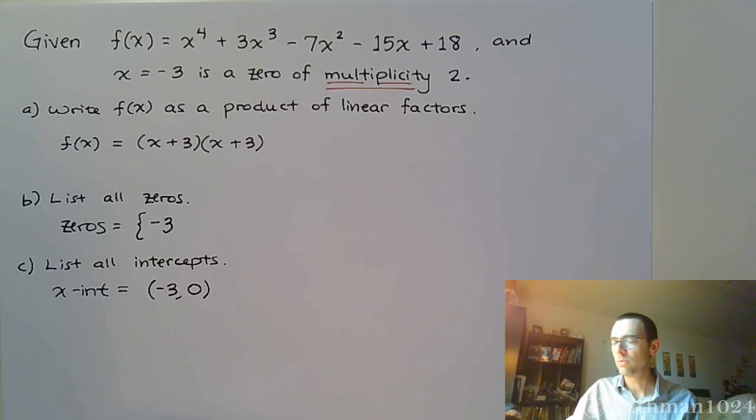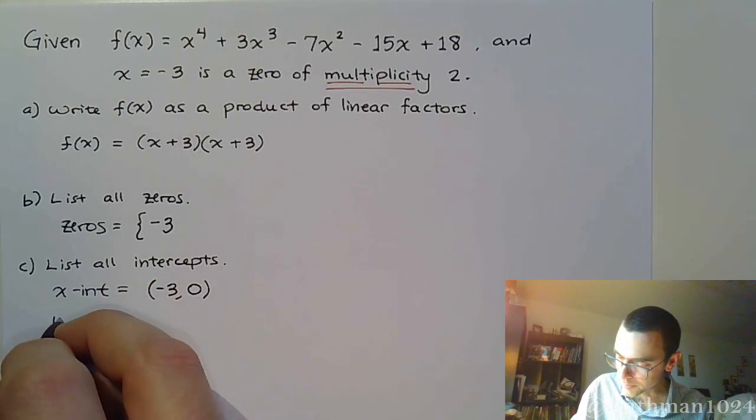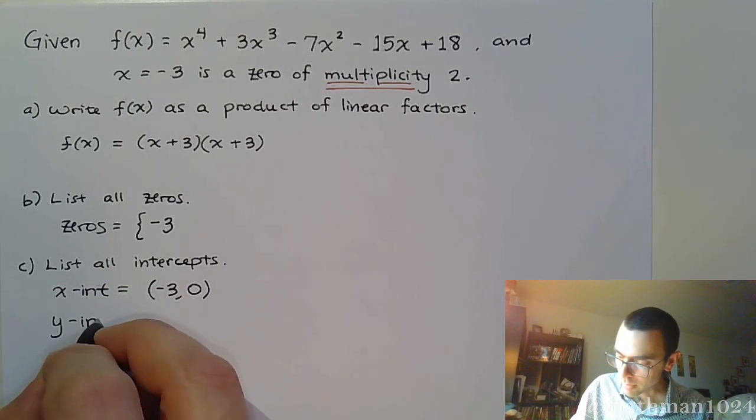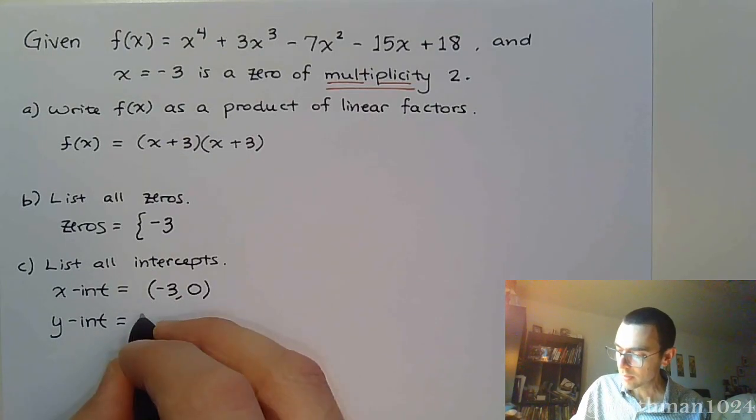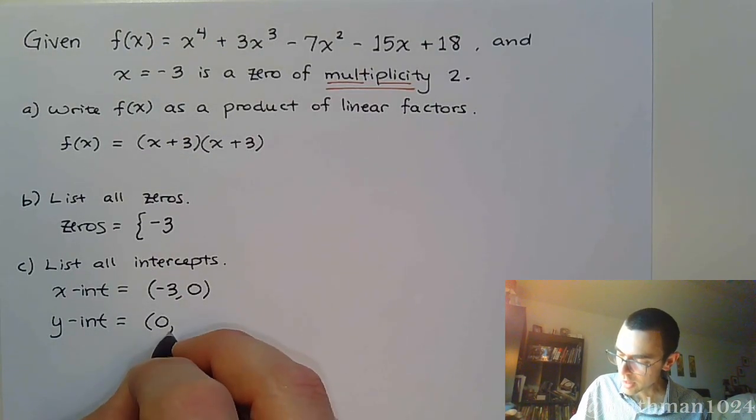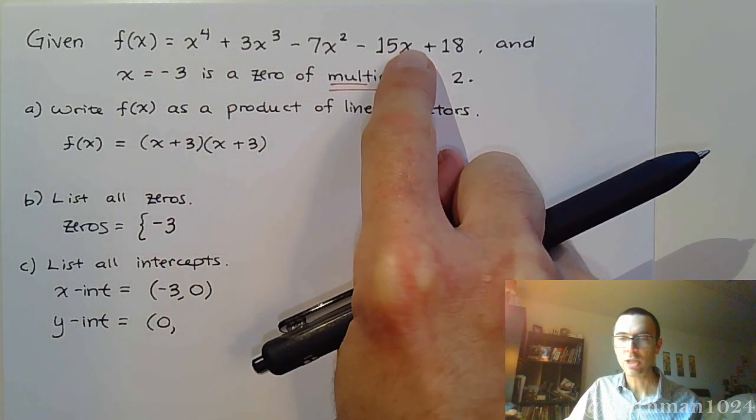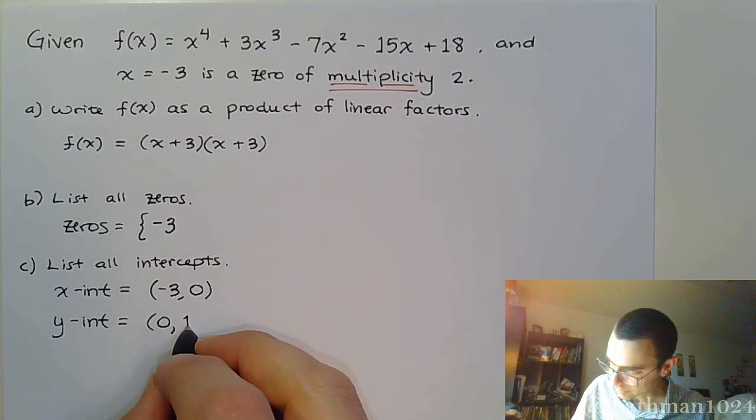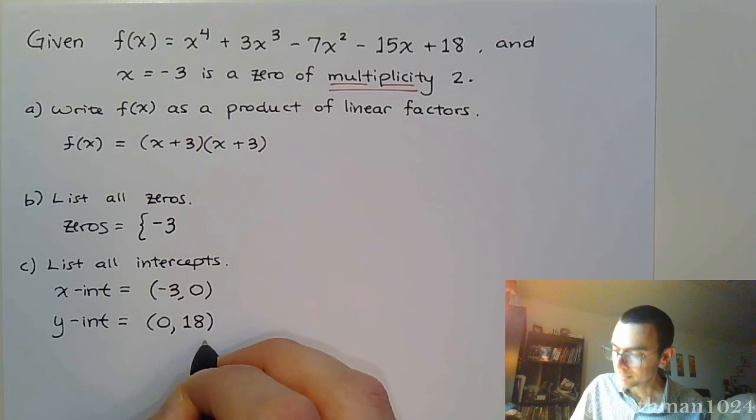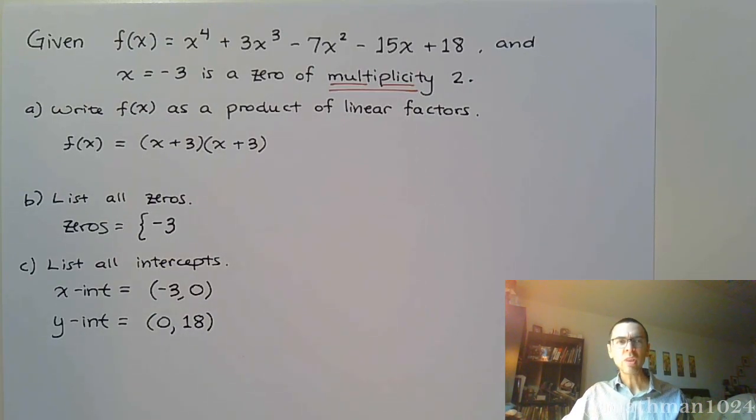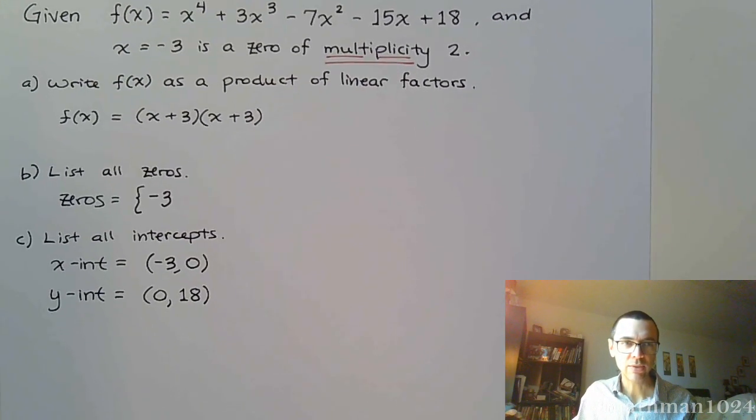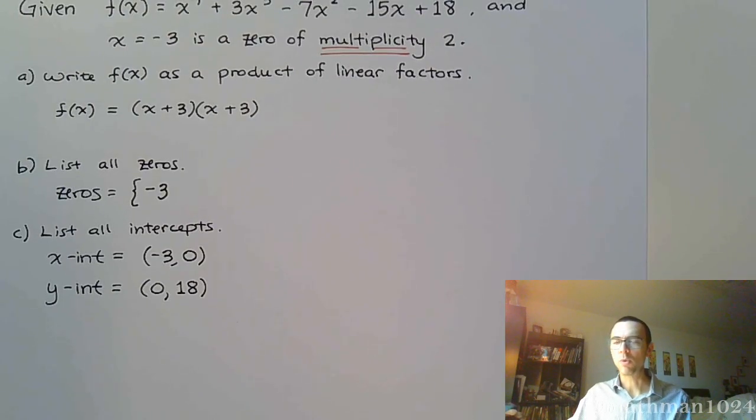The y-intercept is going to be (0, ...). Remember you plug in zero, all of this stuff goes away except for 18. So we at least have something to go off of here. Now let's do the synthetic division to try to break down that polynomial of degree four into something more manageable.